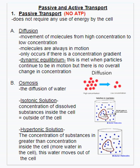Passive and active transport are two ways that materials can be moved in or out of a cell. We'll start with passive — the word passive means without energy, so no ATP is needed. The first on our list is diffusion: it is the movement of molecules from high concentration to low concentration, in other words from where there's a lot stuffed in a tight space to where there's very little. A great example of this is like a fart in a car.